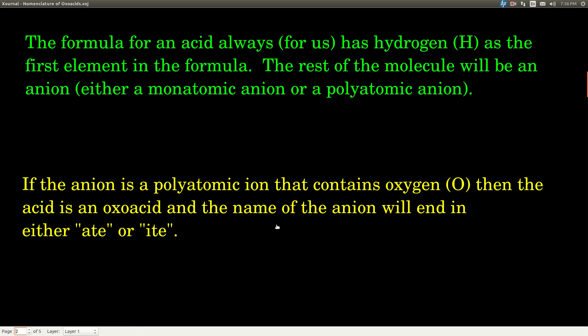If the anion is a polyatomic anion, and it's one of those that contains oxygen, then it is what we call an oxoacid. Get it, oxo for oxygen. And to say the name of the acid, we're going to change the ending of the anion to either ATE or ITE.